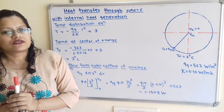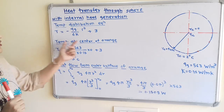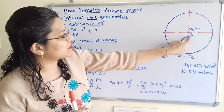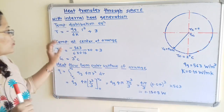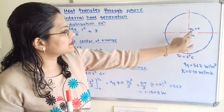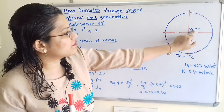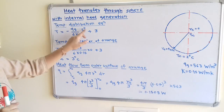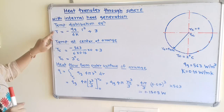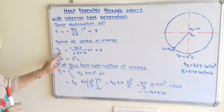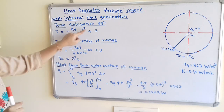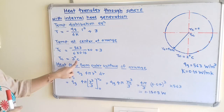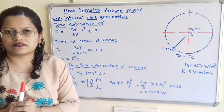Now solving the first part: temperature at the center of the orange. When R = RC = 0, we put R = 0 into the temperature distribution equation. The R² term becomes 0, so the temperature at the center TC = 3 degrees Celsius.